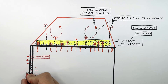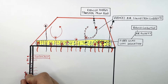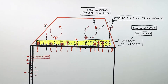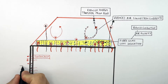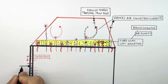Inside the cavity wall is air, which is an insulator, so with an air cavity the rate of conduction slows down. This reduces the conduction of energy from inside the house through the walls into the surroundings.